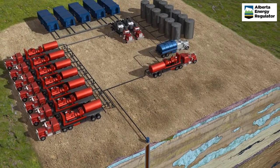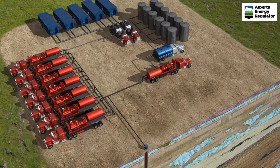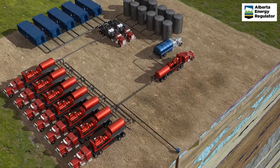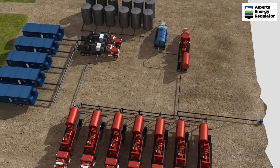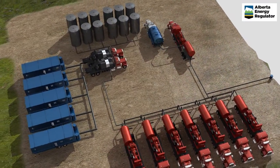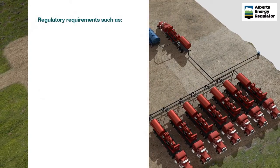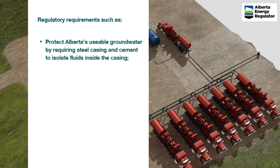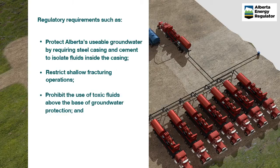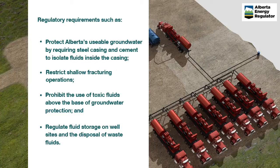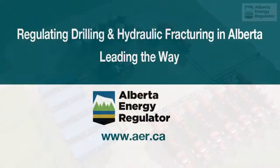As we've discussed, Alberta's geology is well suited for both the development of unconventional oil and gas and for deep disposal of waste fluids. The AER has strong regulations in place to ensure groundwater is protected throughout the drilling and fracturing phases, the production and cleanup processes, and finally, waste disposal. This is achieved by protecting usable aquifers from fluids in the casing through the mandatory use of steel casing and cement, restricting shallow fracturing operations, prohibiting the use of toxic fluids at shallow depths, and carefully regulating waste fluid handling practices. You can learn more about how the AER regulates hydraulic fracturing by visiting our website at aer.ca.